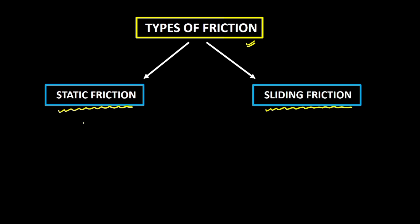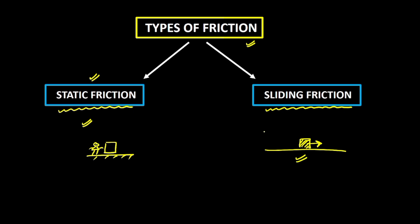In simple terms, static friction is the friction that is acting on an object when it is not moving. You are trying to move an object but it is not moving — the motion hasn't started yet. The friction in that particular scenario is called the static friction. Now once the object starts moving, the friction on the object at that point in time is what is called the sliding friction.